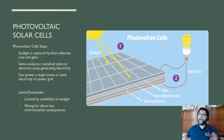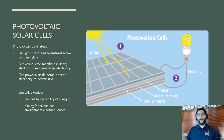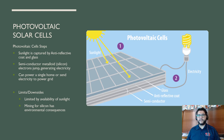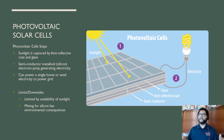You can have one item, like this light bulb here, be powered by a solar cell — this happens a lot with street lights — or you can have the entire house powered by this. You might be able to store that extra energy in a battery or send back your excess electricity to the power grid. The limits are that it's limited by sunlight availability, and you need to mine for silicon, which has environmental consequences.